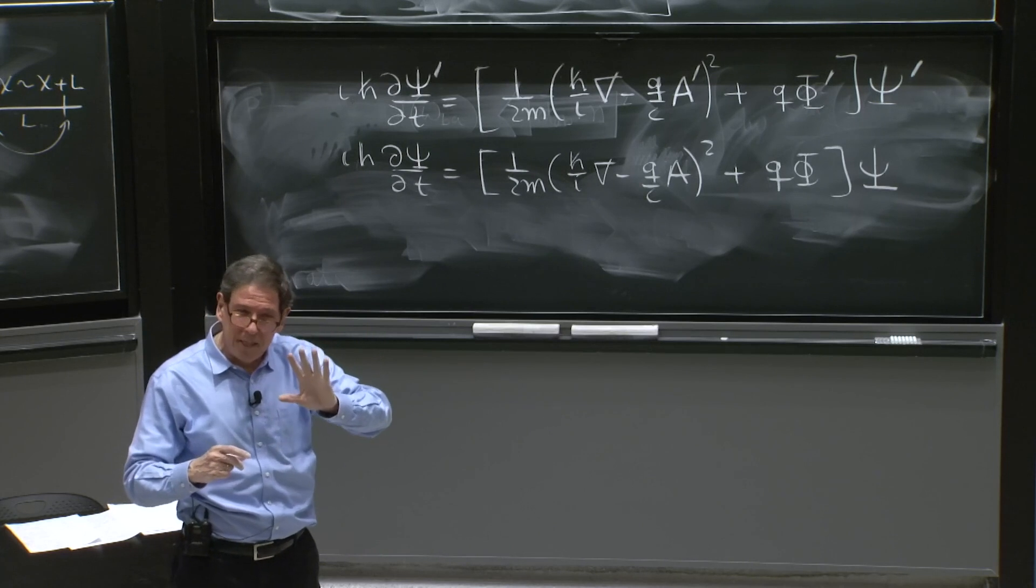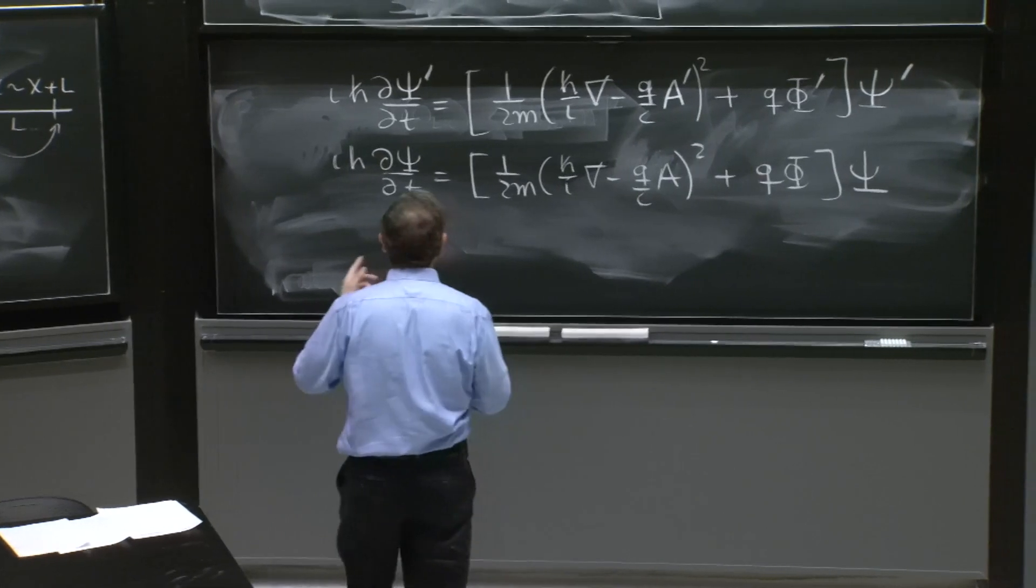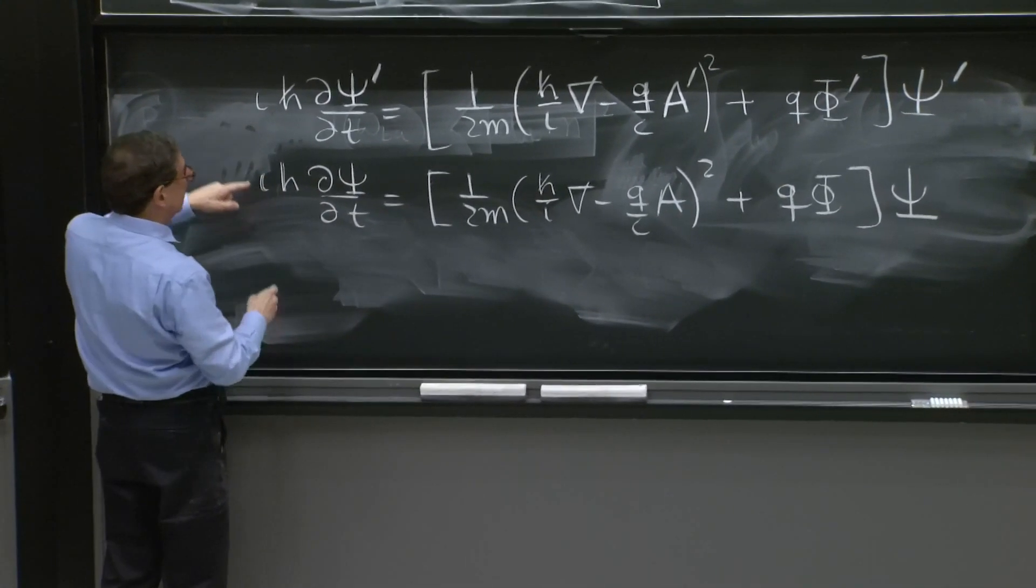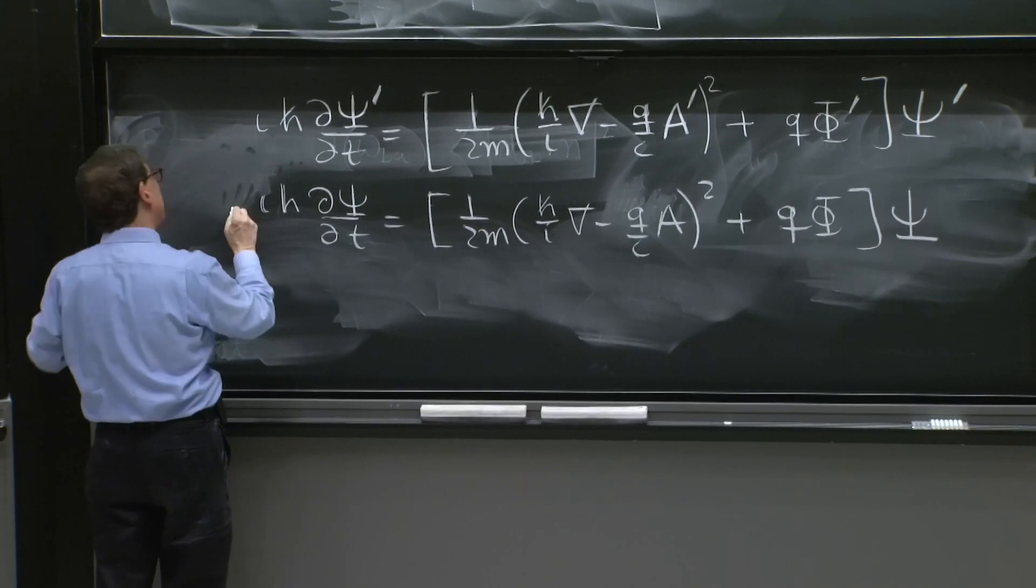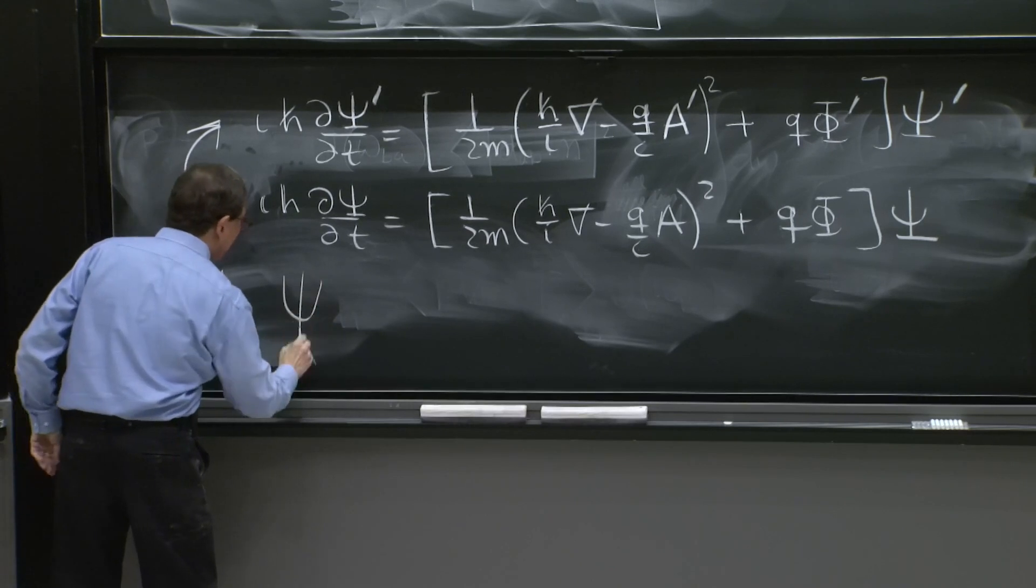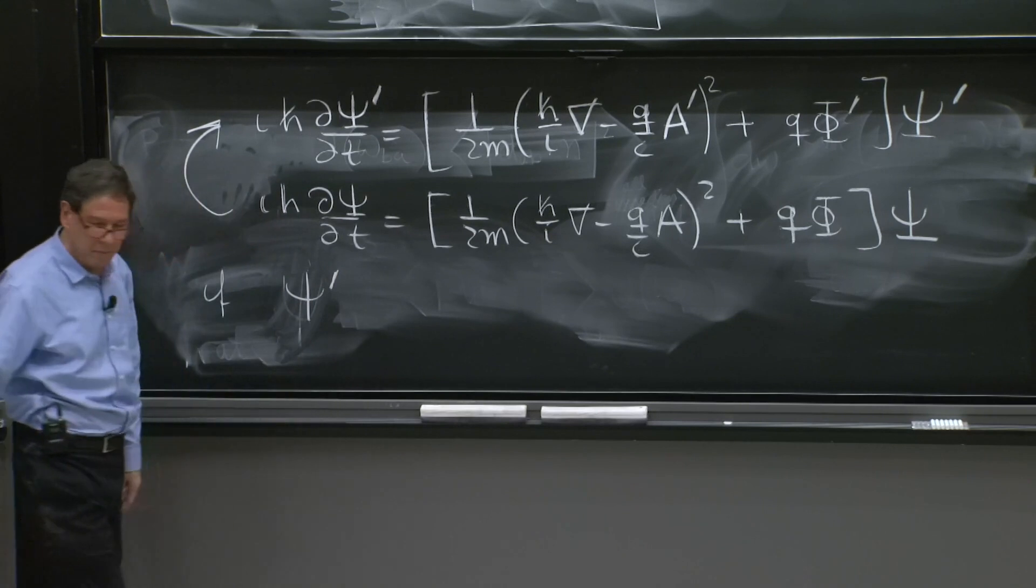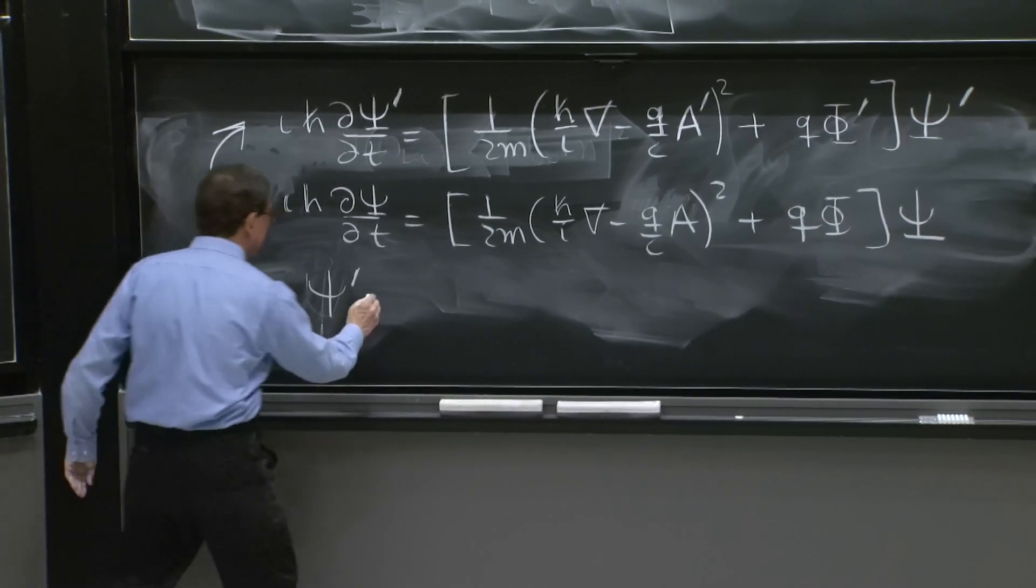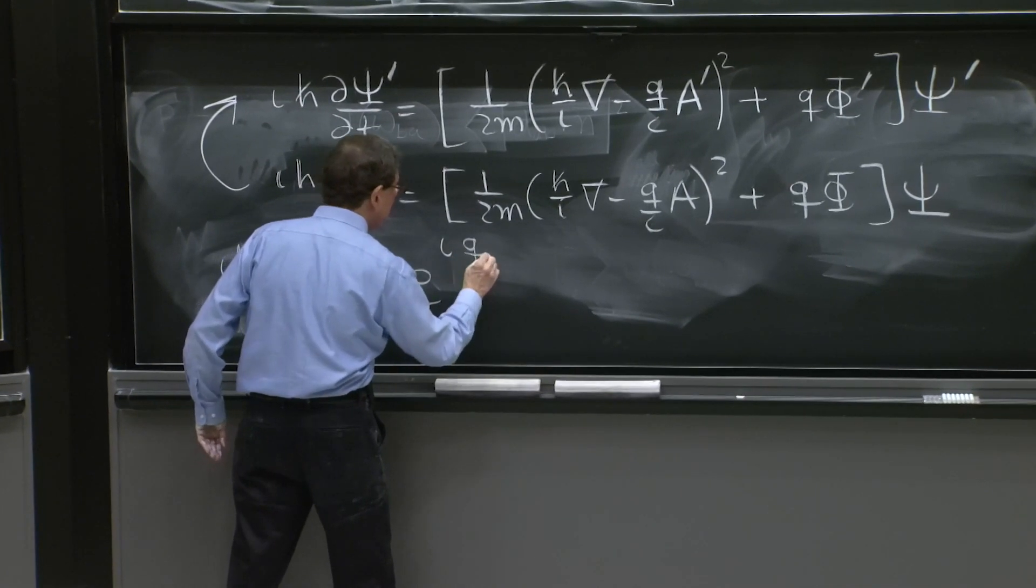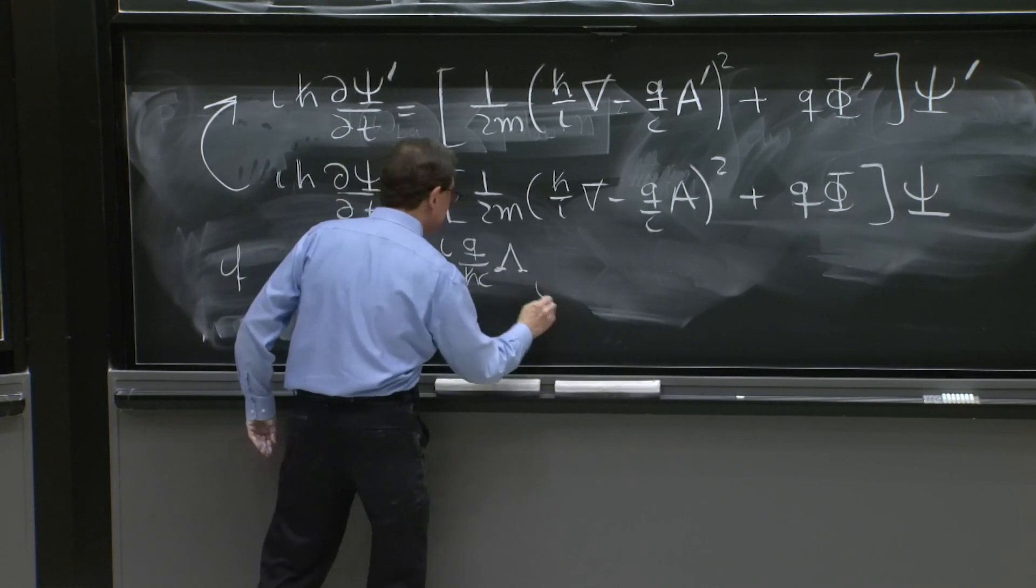But it will be simple enough that we will check that the physics is not changed. So the claim of gauge invariance is a statement that this equation implies this, or this implies that. If ψ' also transforms, and the formula is that ψ' should be equal to e^(iq/ℏc λ) times ψ.